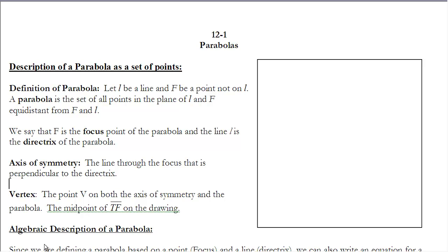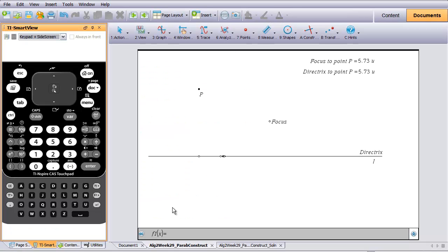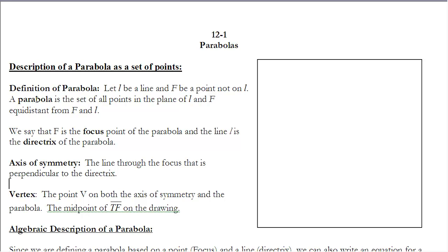From a geometric perspective, the definition of a parabola says: let L be a line and F be a point not on line L. That line L we'll eventually call the directrix. A parabola is the set of all points in a plane equidistant from L and F. So the distance from any point on the parabola to the directrix L must equal the distance from that point to the focus point F.